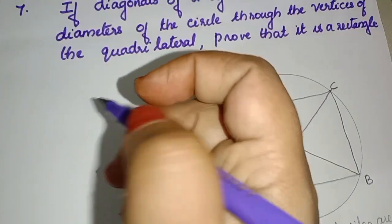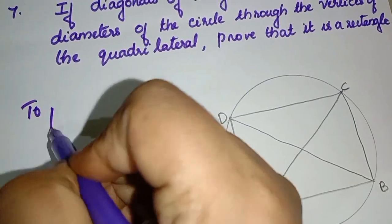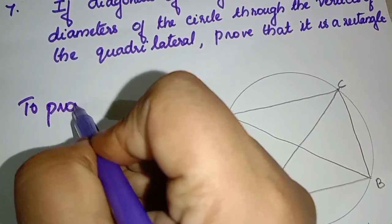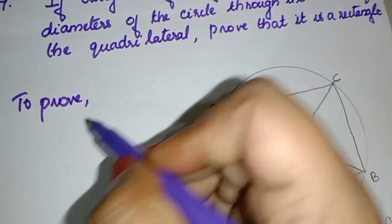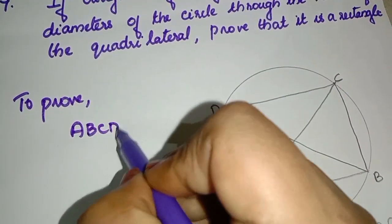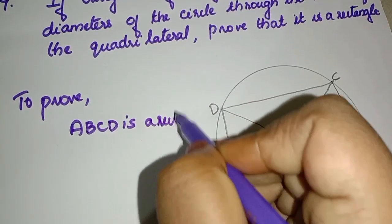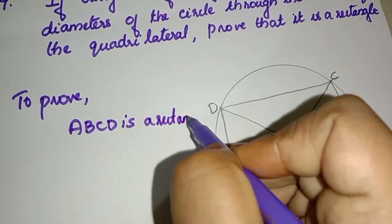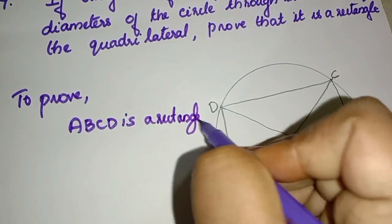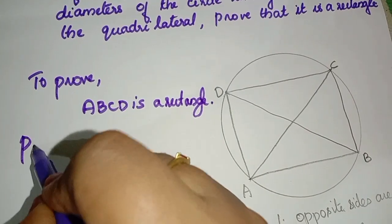To prove: ABCD is a rectangle. So, let's prove it.